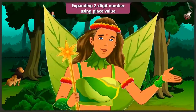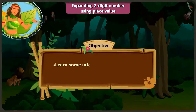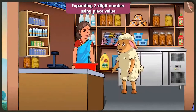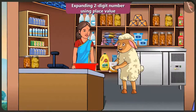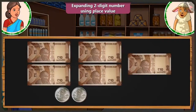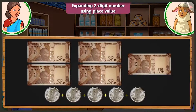Children, today we will learn interesting facts related to expanding two-digit numbers using place value. Aunty, give me a big packet of curd. Yes, I will give you — take it. How many rupees do I have to pay? You have to pay 55 rupees for this curd. For 55 rupees, how many notes and coins will I have to give? You will have to give 5 notes of rupees 10 and 5 coins of rupees 1.